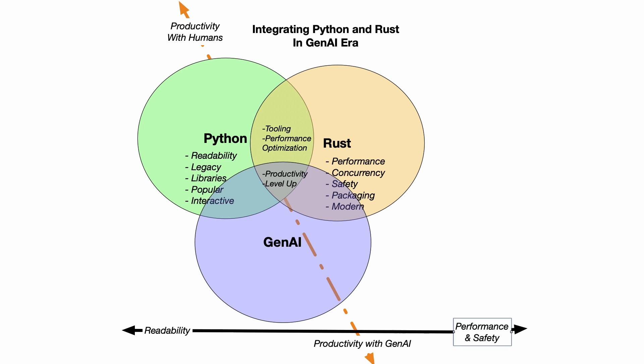First, let's look at Python. On the left we have readability, legacy support, and libraries. It's one of the most popular languages in the world and it has a great interactive feedback loop. Python is historically designed for the human — it's very productive for people. If you're building a web app, a command line tool, or a script, it's hard to beat Python for that initial productivity.